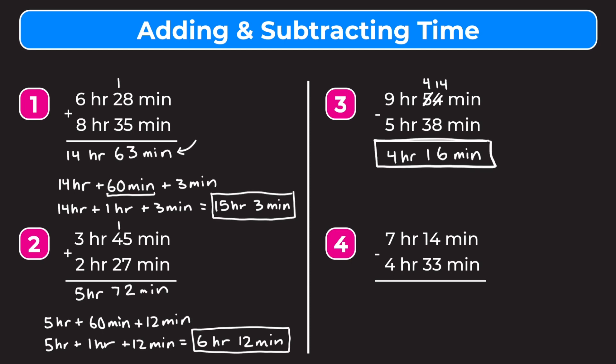In example four, since 14 minutes is less than 33 minutes, we need to borrow from the hours. We take away 1 hour from 7 hours, making it 6 hours. Since 1 hour equals 60 minutes, we add 60 minutes to our 14 minutes, making it 74 minutes.